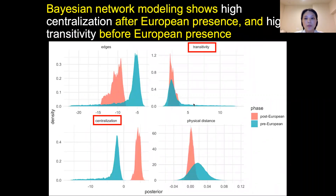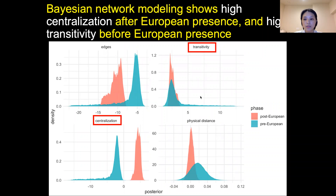Now let's look at the posterior distributions. I'd like to draw your attention to transitivity and centralization. For the pre-European network (the blue one), we can see a high positive value with a long tail for transitivity, suggesting the presence of multiple subgroups sharing burial goods in common. In contrast, the strong negative centralization shows a tendency toward decentralization — most burials have a similar number of ties without any prominent individuals. For the post-European network (the red one), we see a positive value of centralization, indicating prominent individuals having more relations with other burials and possessing more prestige goods. The value of transitivity is also mostly lower than in the pre-European network, suggesting changes in social structure.